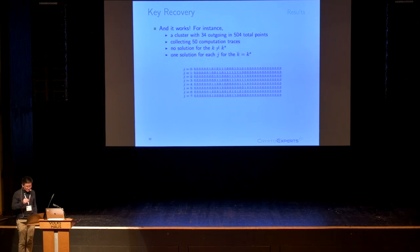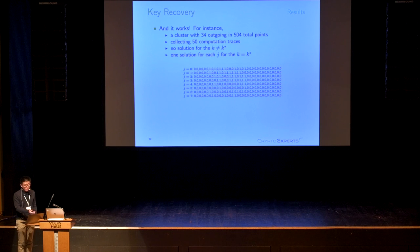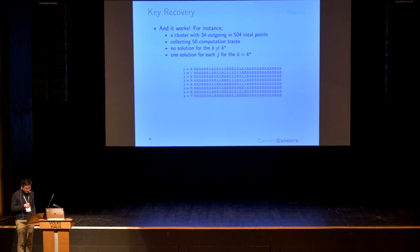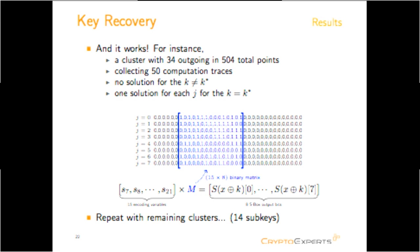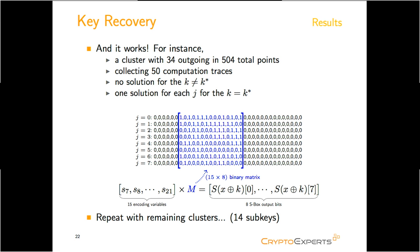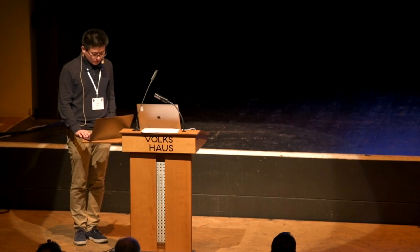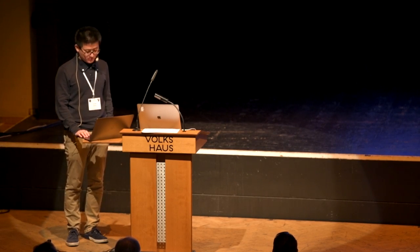For instance, we have a cluster with about 500 total nodes and 34 outgoing wire values. We recorded computation traces and extracted the outgoing variables for 50 executions. The result shows there is no solution for any incorrect key guess, but there is a solution for the correct key guess for each S-box output, allowing us to solve the linear equation system. With the wire values ordered by index, only 15 consecutive wire values among the 34 outgoing ones are used, and the decoding function is simply multiplying these outgoing wire values by a binary matrix. We repeated this procedure for the remaining clusters and finally extracted 14 of the 16 sub-keys. For the other two, we used brute force — it's fast and easy. We successfully recovered the key of the implementation.